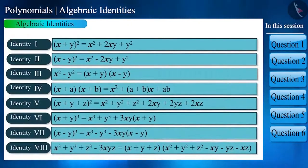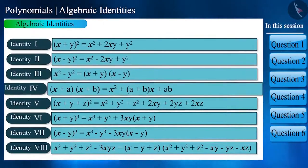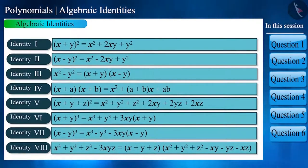We have a total of 8 identities. By using these 8 identities, let us see how to find the factors and products of polynomials.